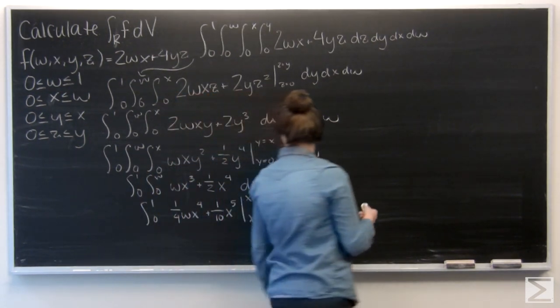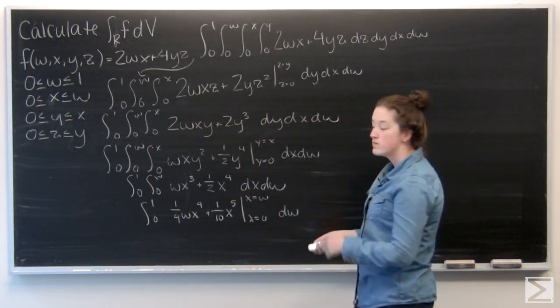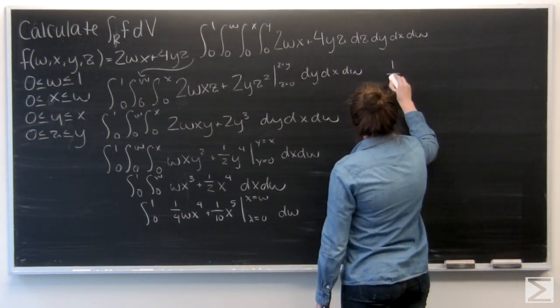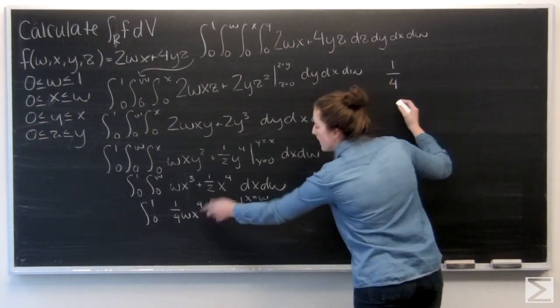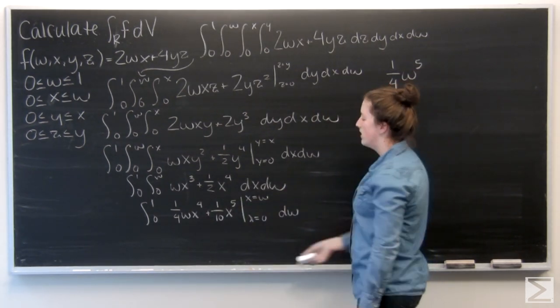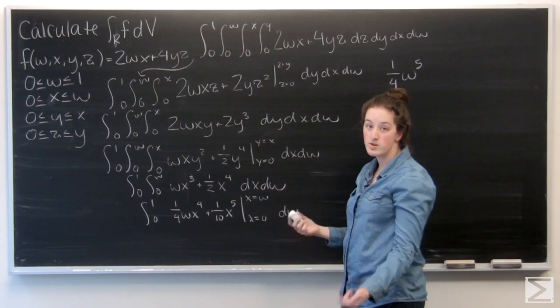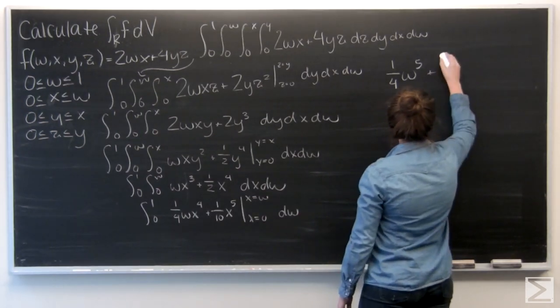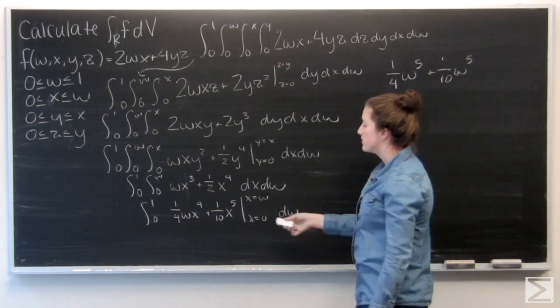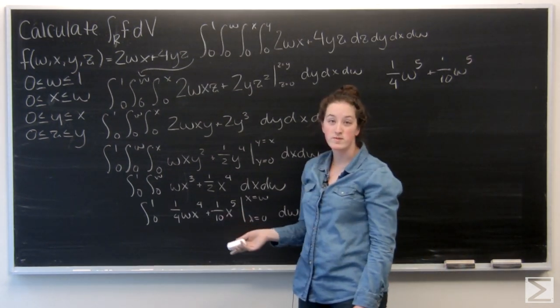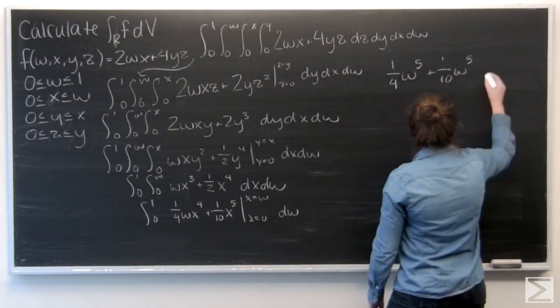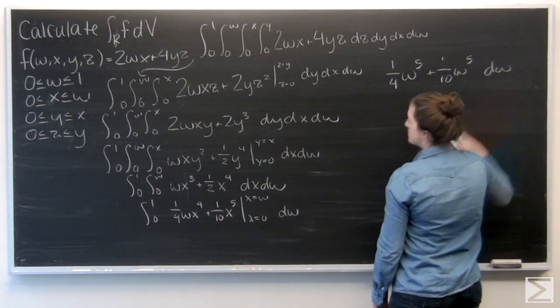Let me move over here. So plug in a w everywhere that I see an x. So 1 fourth, that becomes w to the fifth. And that becomes 1 tenth w to the fifth. Now for x equals 0, both of those terms become 0. So again, I have nothing to subtract.